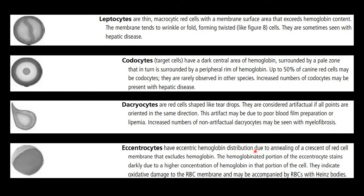Excentrocytes have eccentric hemoglobin distribution — instead of being distributed evenly with normal central pallor, the distribution is unequal, due to annealing of a crescent of red cell membrane that excludes the hemoglobin. They may indicate oxidative damage to the RBC membrane and may be accompanied by Heinz bodies.